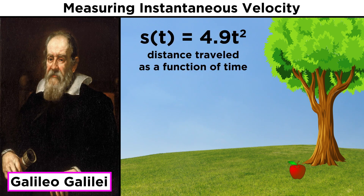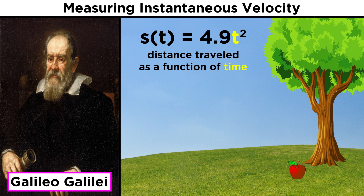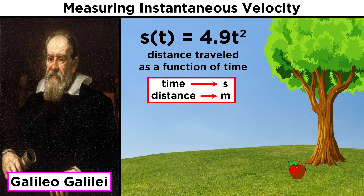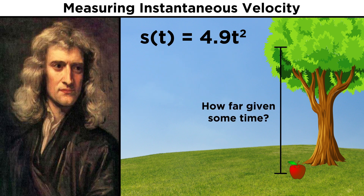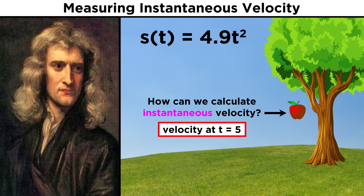Galileo had already discovered some years prior that the distance traveled by a falling object, represented by s of t, would be equal to 4.9t squared, with t in seconds, giving a distance in meters. So Newton could easily use this law to calculate how far something would fall over a given interval of time. But this was not the problem at hand. Newton wanted to know something not about an interval of time, but rather about an instant in time, like perhaps the velocity of the apple precisely five seconds after letting it fall.